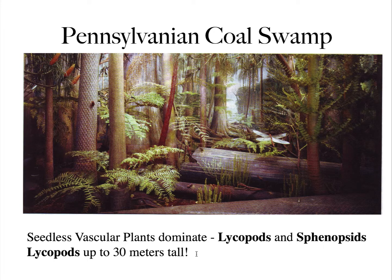For the Pennsylvanian coal swamps, while gymnosperms were beginning to develop, it was really the Seedless Vascular plants that dominated and eventually made all the coal for the Carboniferous. The two important groups are the lycopods and the sphenopsids.